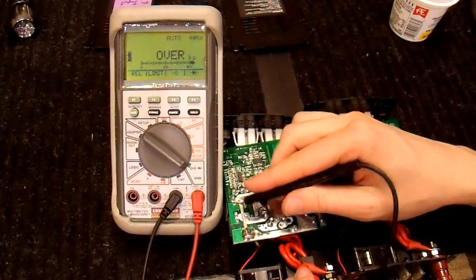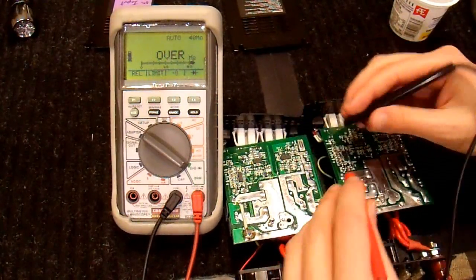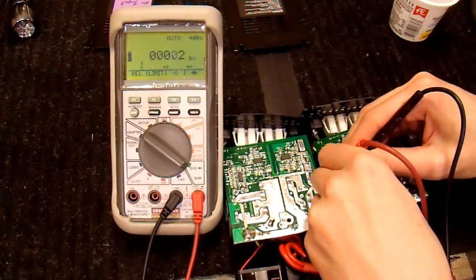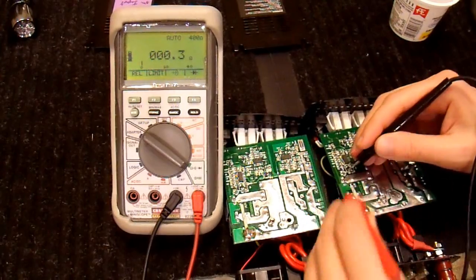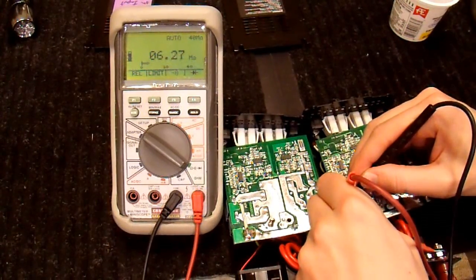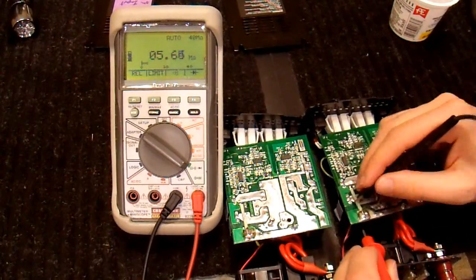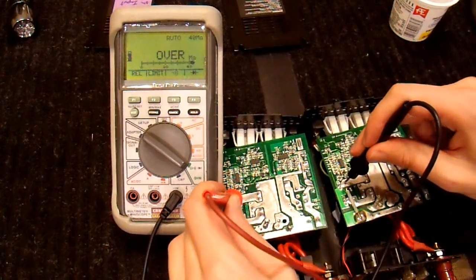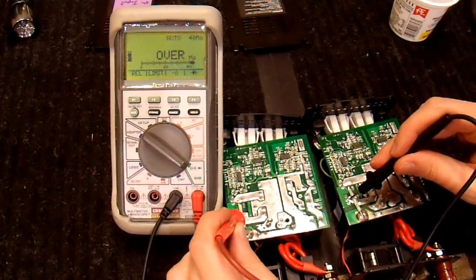And zero ohms. This FET's bad. This one is probably good. We'll go to the other inverter and check the same thing. Once again, this one is zero ohms. This FET's bad for sure. This one over here measures open circuit. So, this is probably good. So, these two over here are likely bad. These two FETs here are likely good.